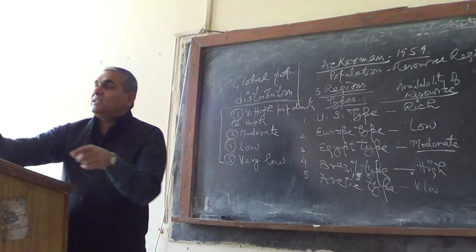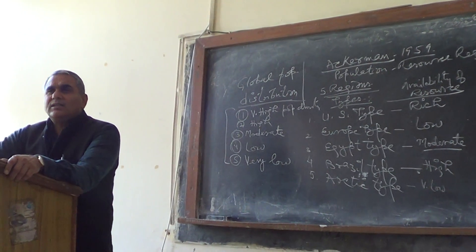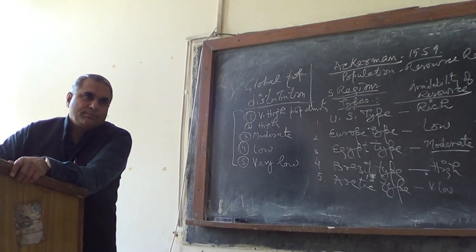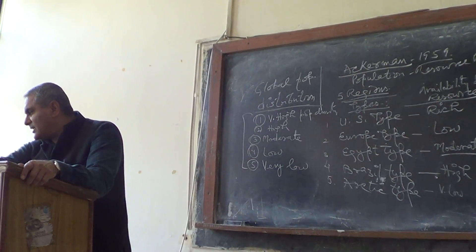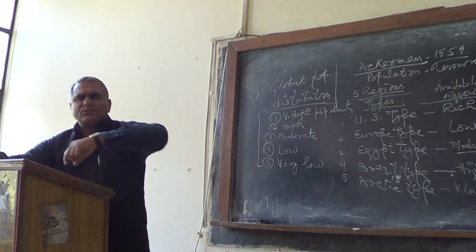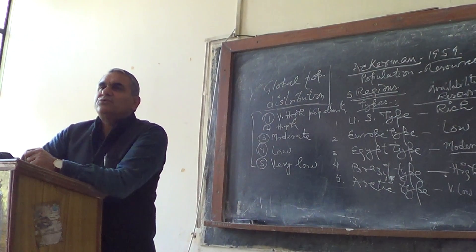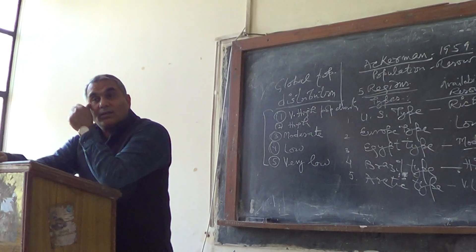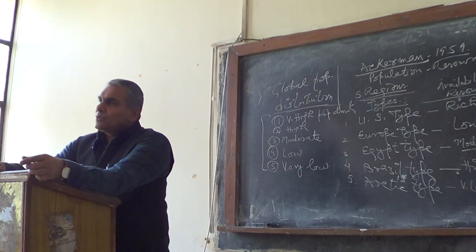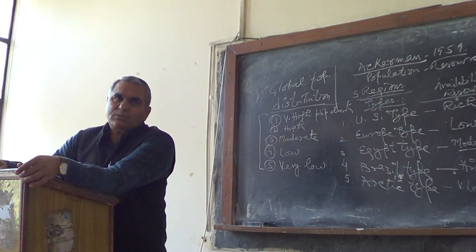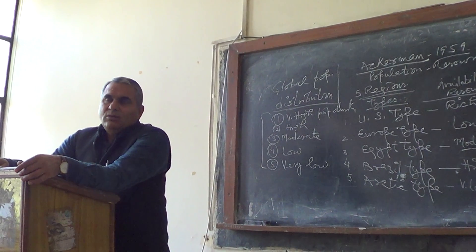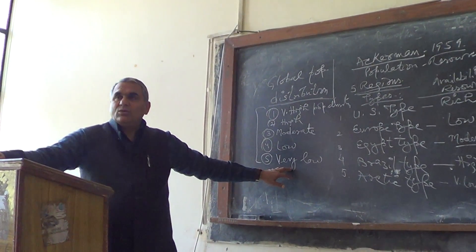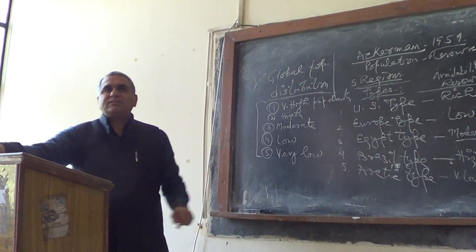The fifth category is very low population density, where conditions are not ideal for human habitat. Climate is very extreme — either very cold or very hot — or terrains are rough. Survival is not possible. Beyond this, we can put very low and nil population density.